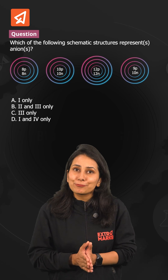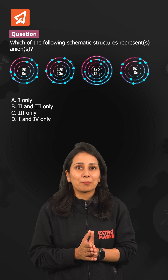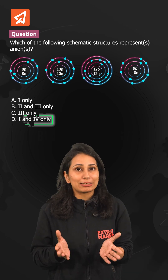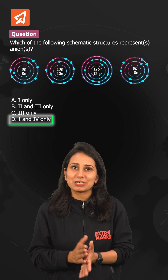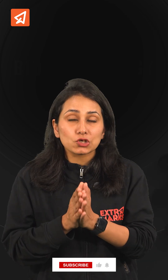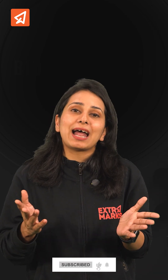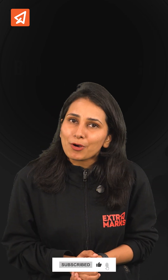The first and fourth elements form anions, and the correct option is option number D. If you'd like to practice more such questions and view step-by-step solutions, copy the link in the comments below and explore them on the Extra Marks Learning app.